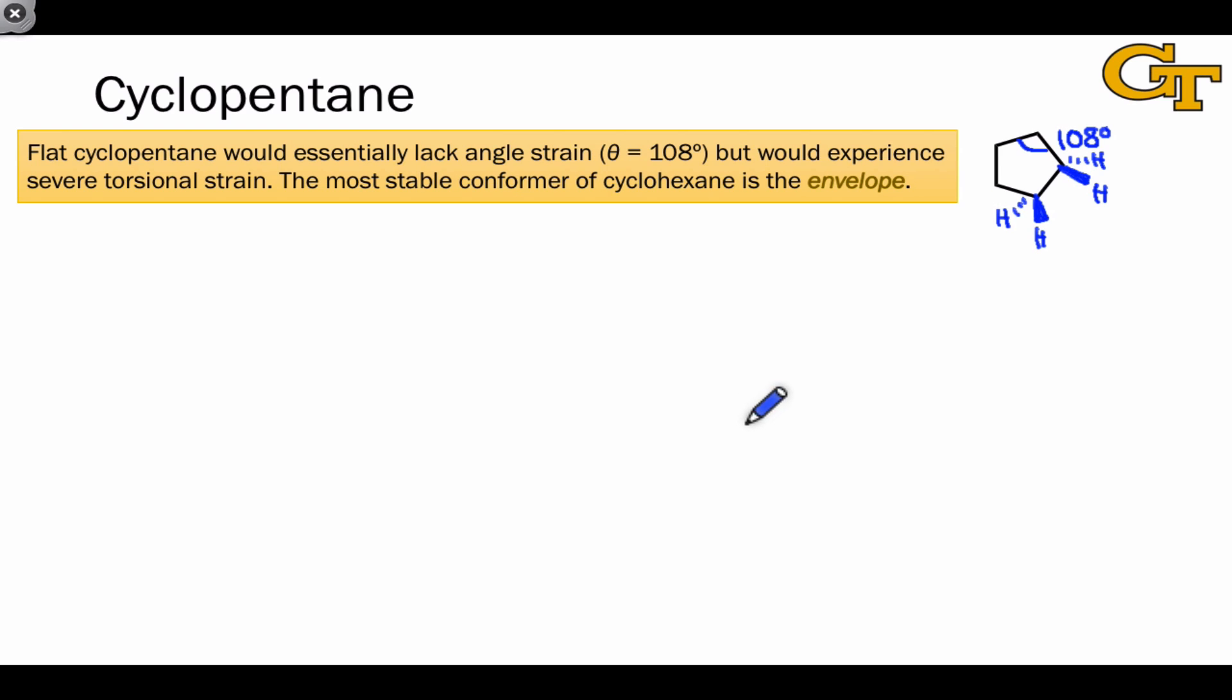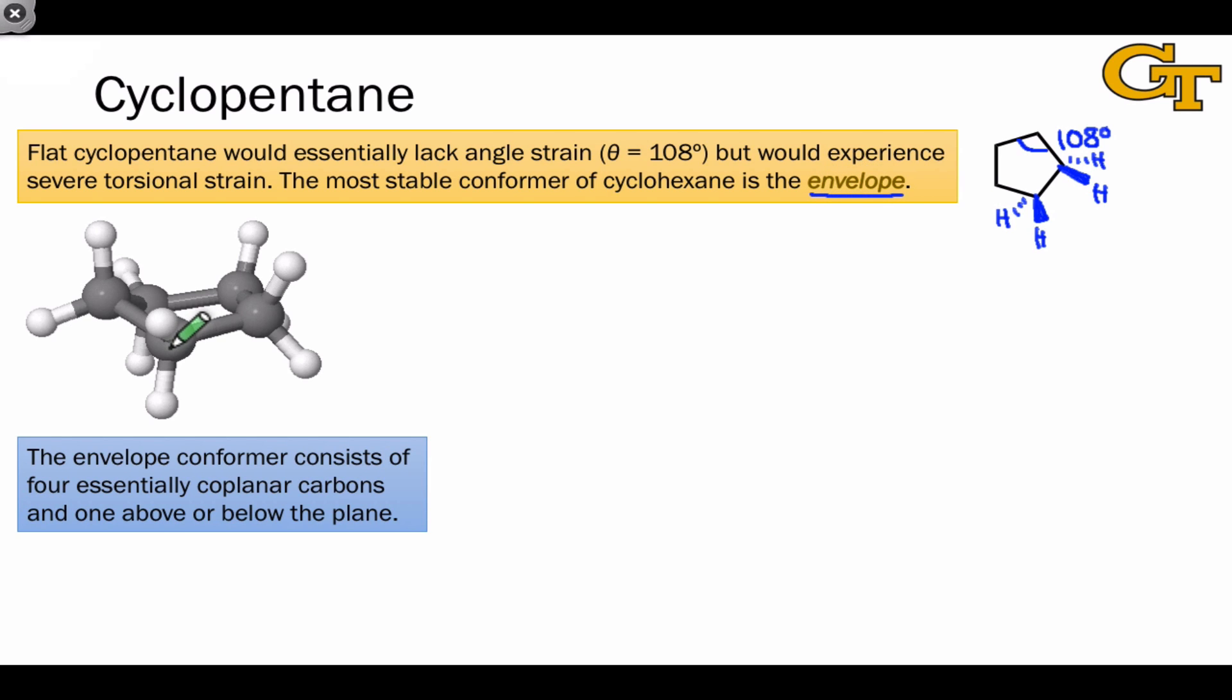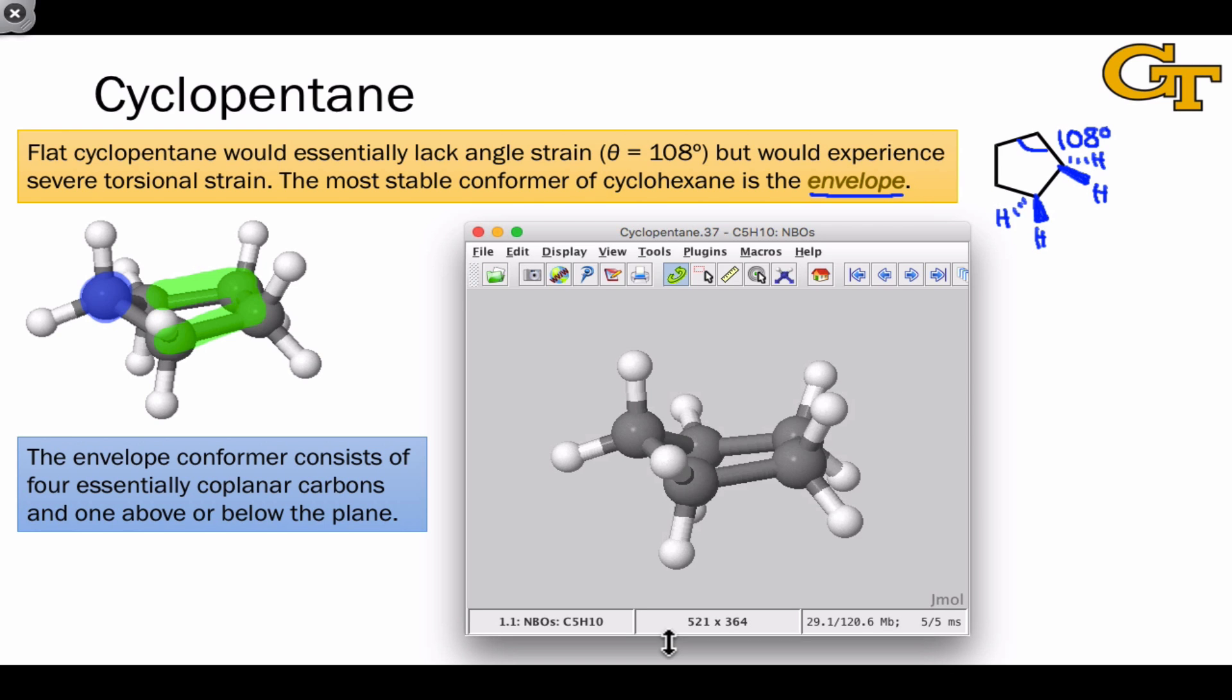The most stable conformer of cyclopentane involves some bending, as we saw for cyclobutane, and it's called the envelope. The envelope conformer consists of four essentially coplanar carbon atoms, with the fifth above or below the plane formed by those four carbon atoms. Here, I've highlighted the coplanar carbons in green, and the carbon highlighted blue is above the plane formed by these four. This conformer alleviates a lot of the torsional strain issues in the flat structure.